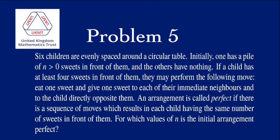Problem 5. Six children are evenly spaced around a circular table. Initially, one has a pile of n greater than 0 sweets in front of them and the others have nothing.